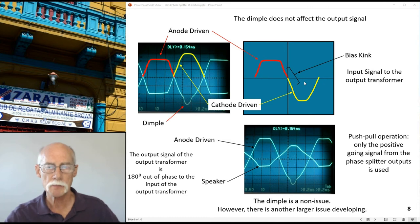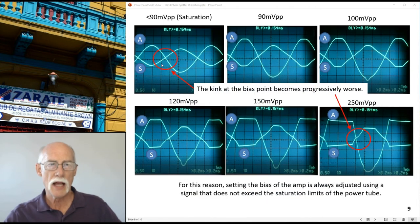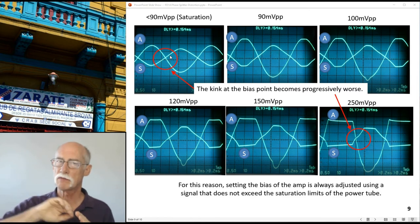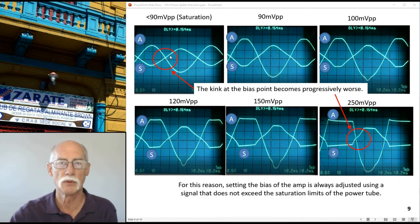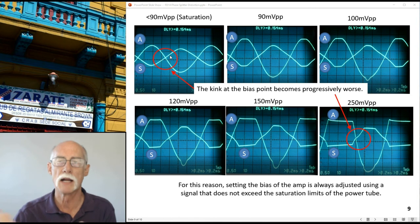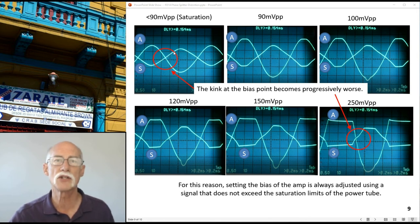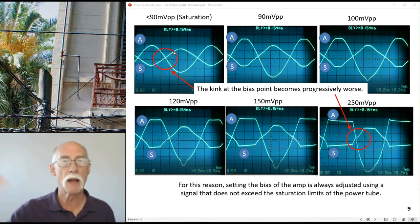This is the bias kink, which is the next subject of importance. At saturation, both signals look symmetrical and the kink is relatively smooth. If you're going to adjust the bias point of a push-pull amp, you want to set the input signal to give you the saturation limit. That should be a smooth transition. If it's not a smooth transition, that is when and only when you adjust the bias setting for either of the power tubes.